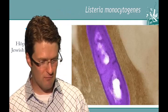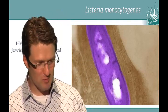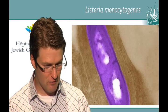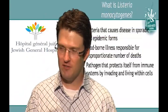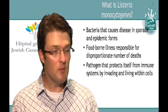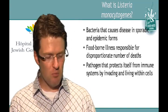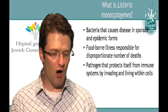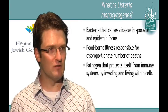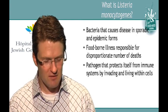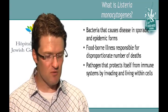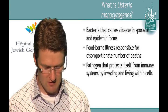Now on to the last of our four topics tonight — Listeria. You've probably heard something about this in the news recently. What is Listeria monocytogenes? It's a bacteria that causes disease sometimes sporadically and sometimes in epidemic form. It's a foodborne illness, but if you look at all foodborne illnesses, Listeria has a disproportionate number of deaths relative to the number of episodes of sickness it causes. It's also a very smart pathogen that actually protects itself from your immune system by invading and living within cells.